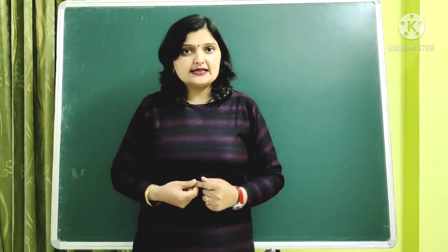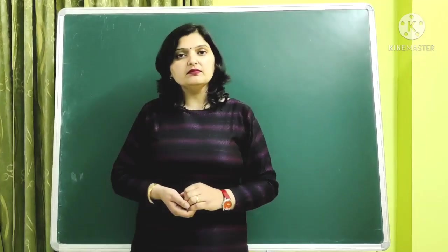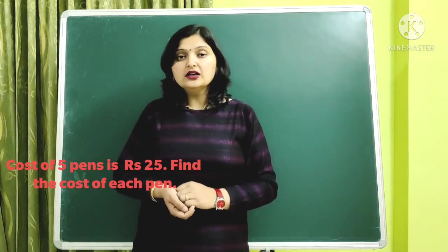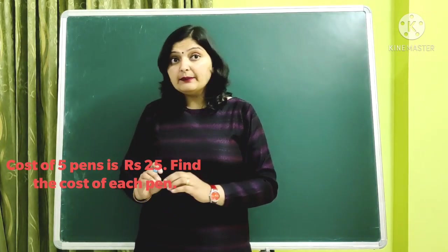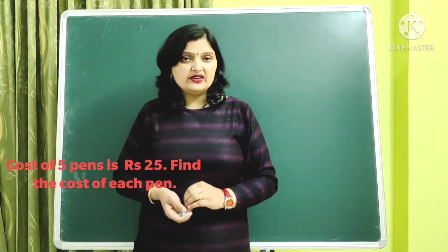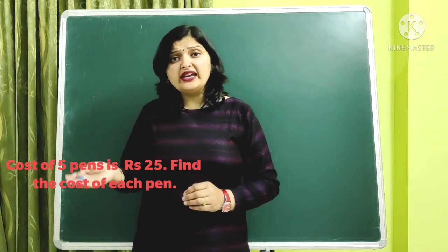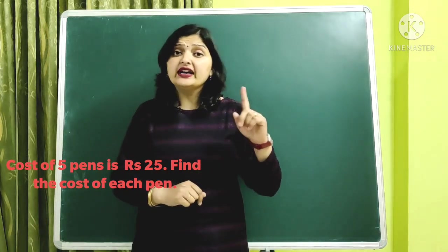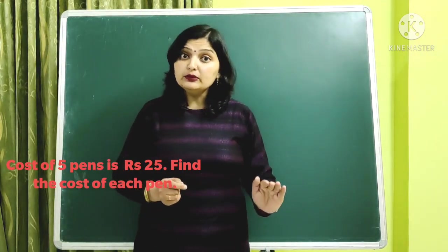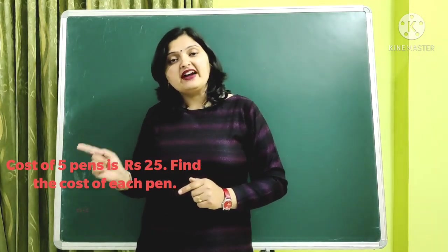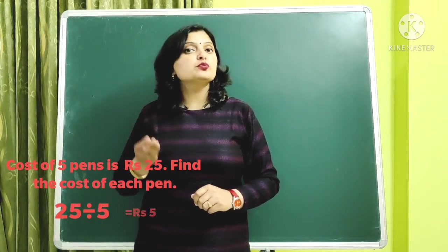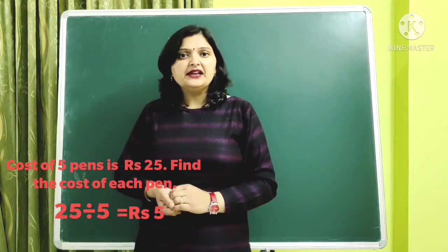So let us discuss. For this I am taking an example: suppose the cost of five pens is rupees 25 — find the cost of each pen. You already know this type of question. The cost of five pens is rupees 25, and you have to find the cost of one pen. Since one pen's cost will be less than five pens' cost, we divide 25 by five to get rupees five as the cost of one pen.